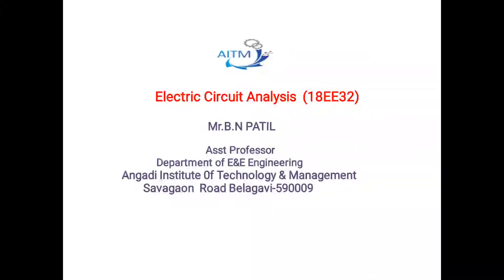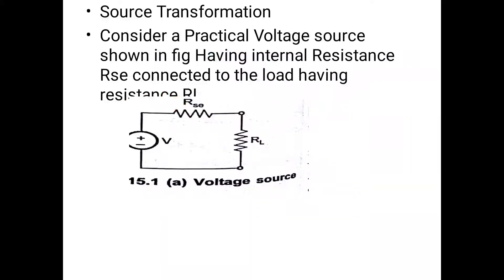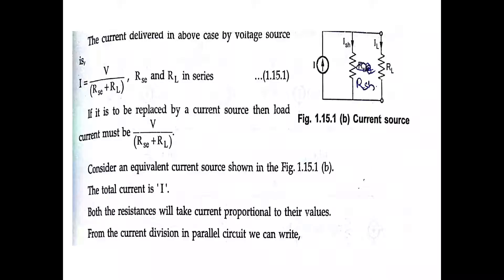Good morning students. The next topic is source transformation. In source transformation, you transfer a voltage source to a current source. Consider a practical voltage source as shown in the figure, having internal resistance RSC connected to a load. The simple circuit has RSC, a voltage source V, and load RL, where RSC is the series internal resistance. To convert a voltage source to a current source, note that the voltage source is in a series connection.